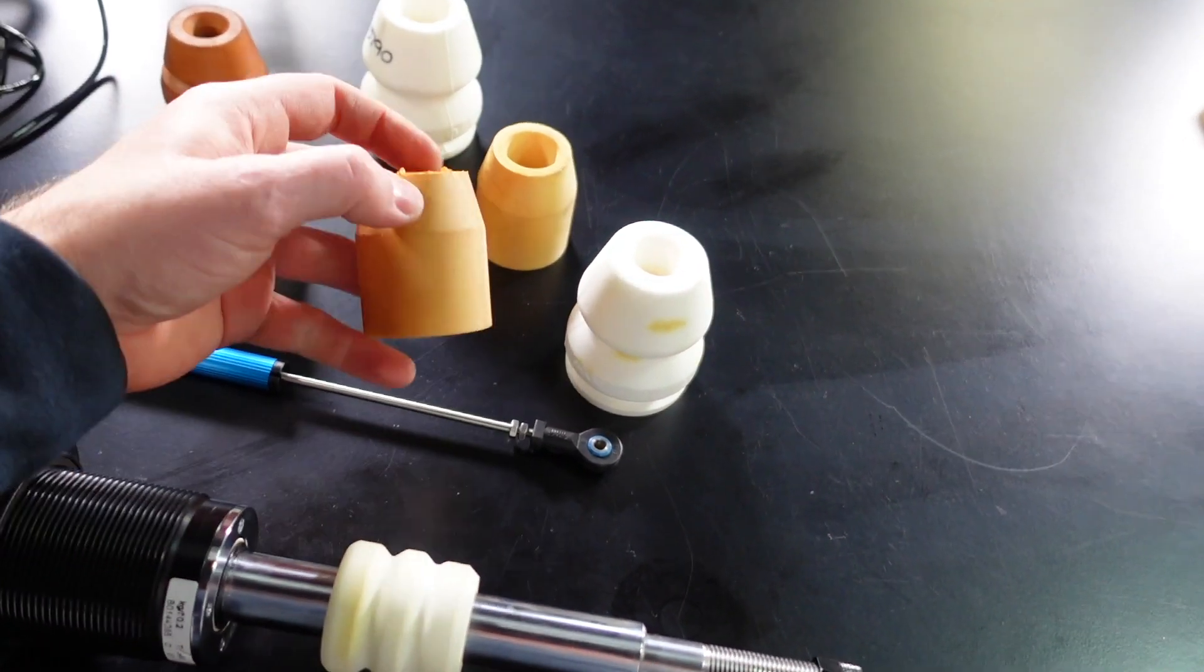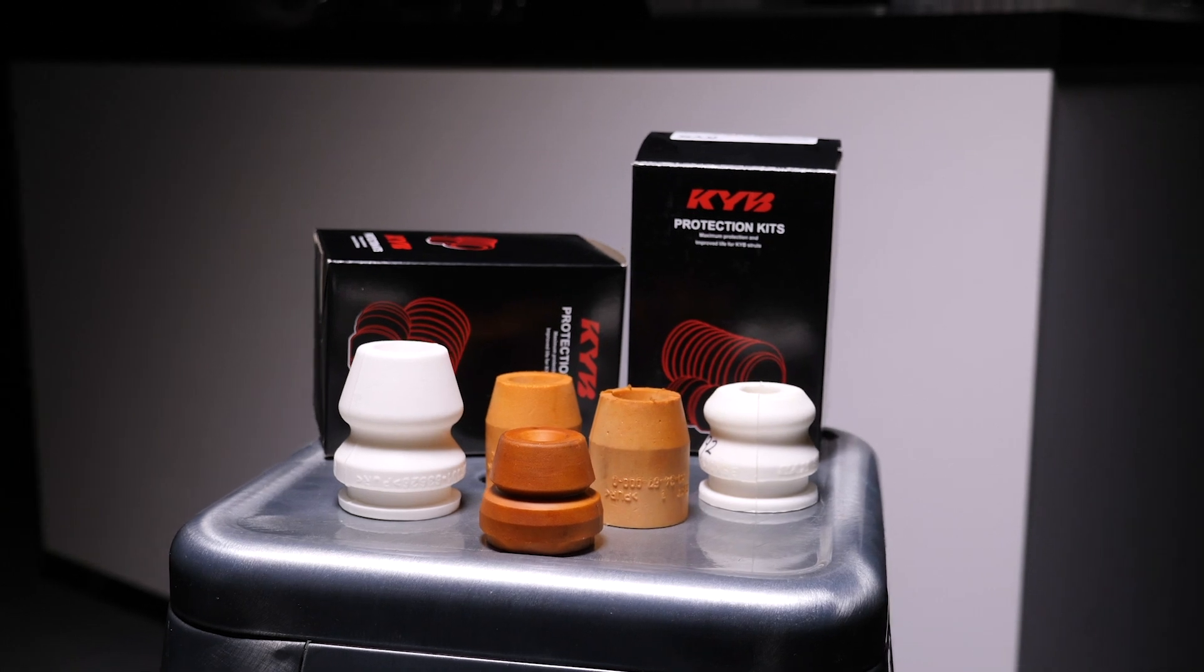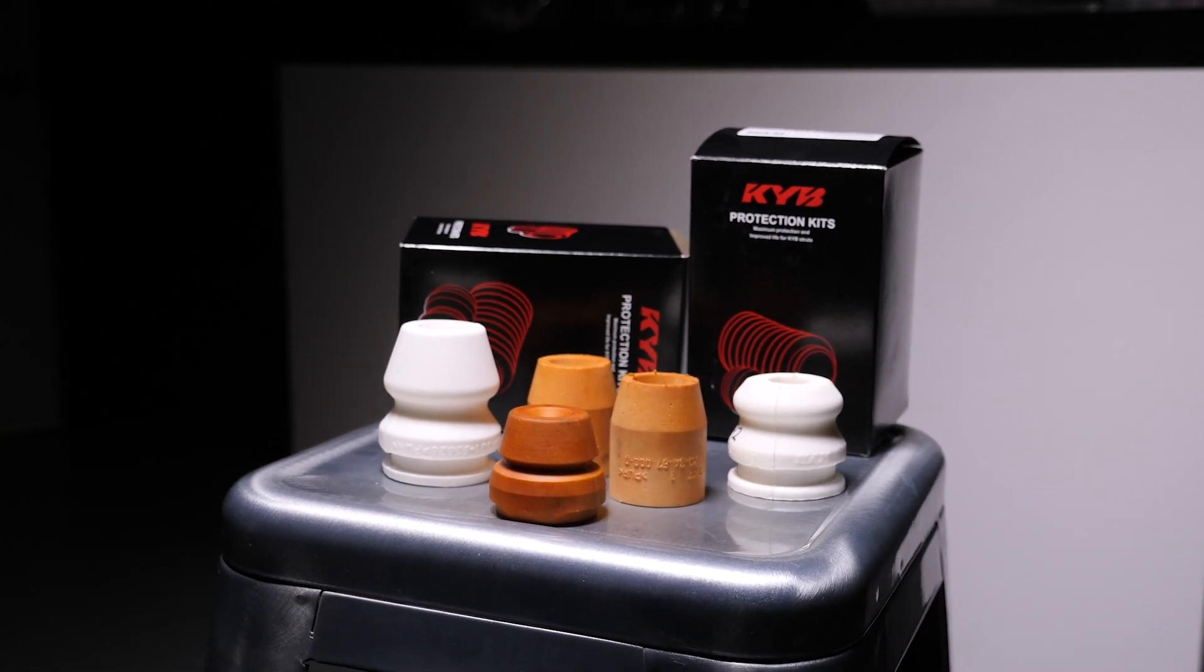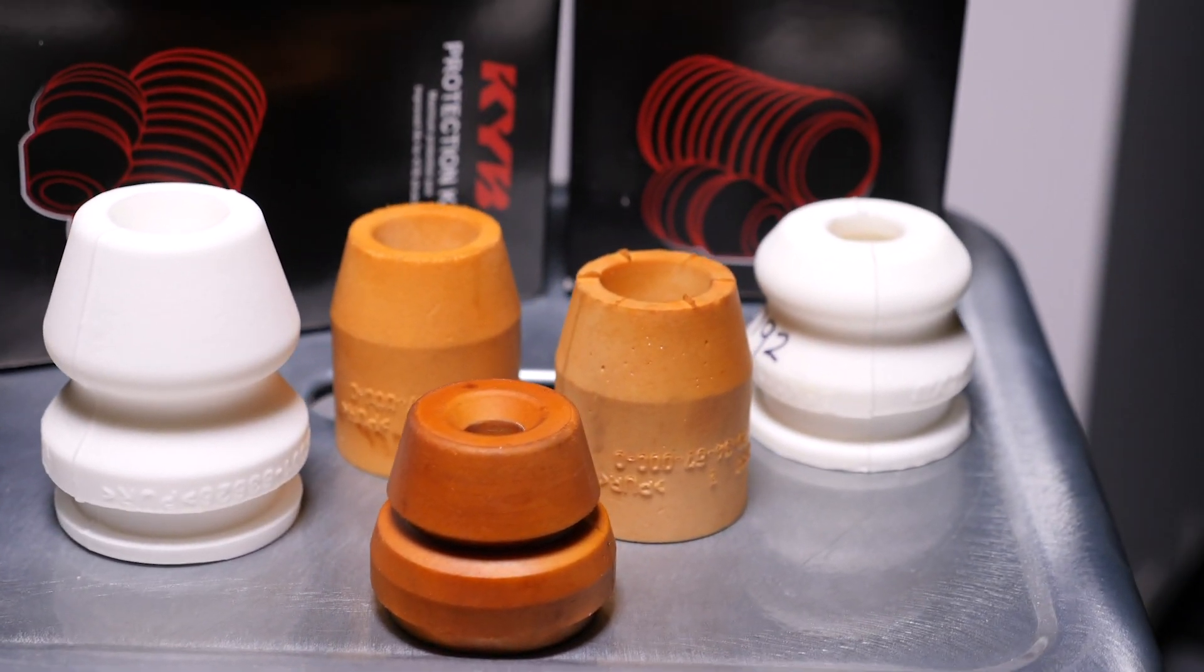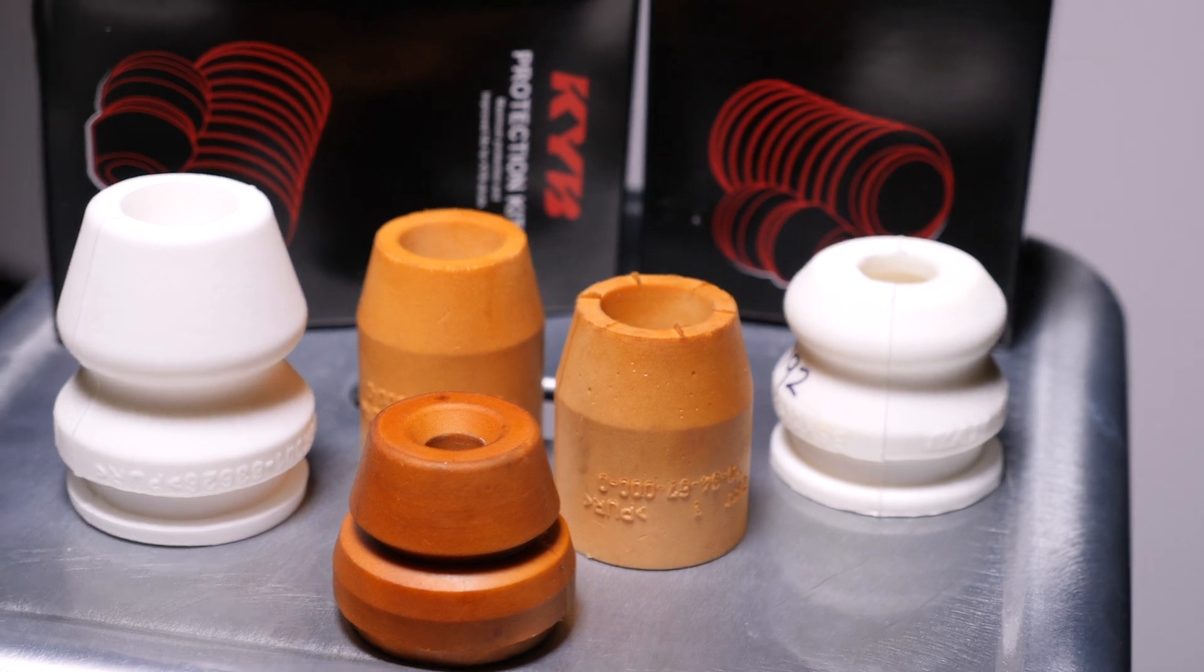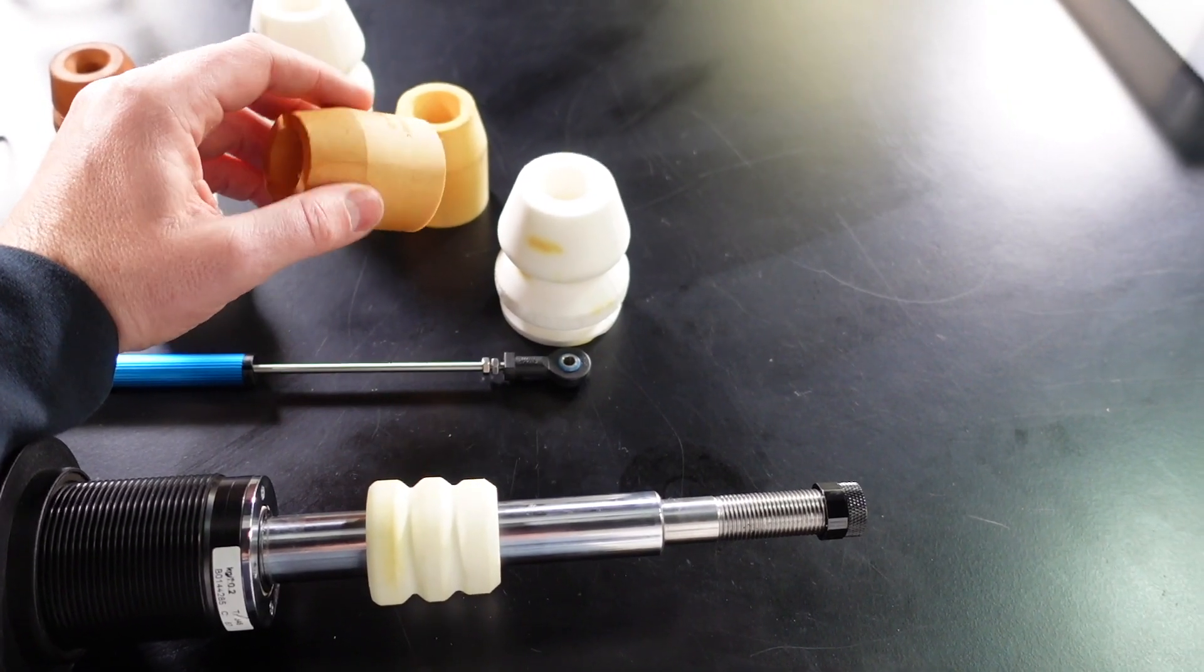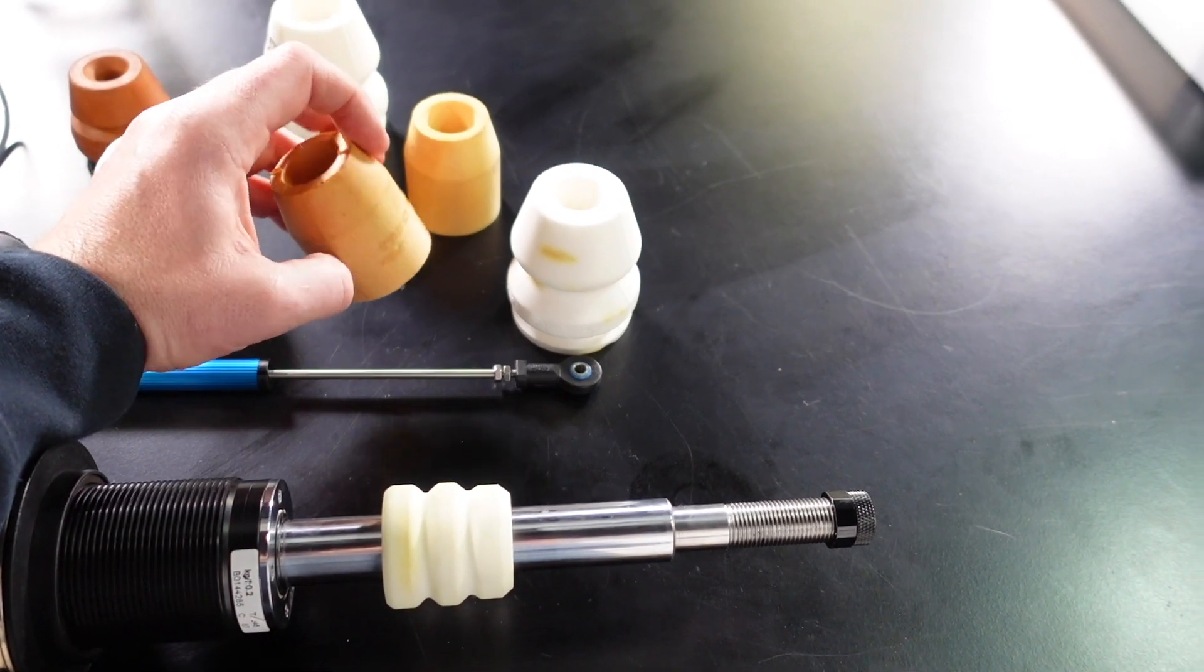So the most common type of bump stop is a polymer type, like everything we see here. One of the things to be aware of with polymer bump stops is that they are very sensitive to both temperature and how many cycles they've done. So their characteristics will change over time. So their rate and their internal damping changes quite a lot as they're used and as their temperature changes on track, their characteristics change a lot as well.